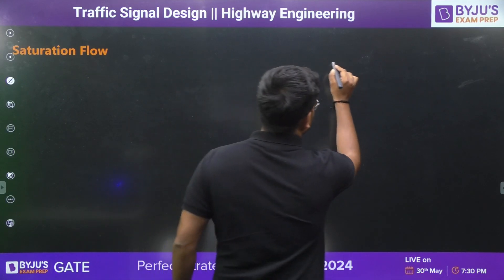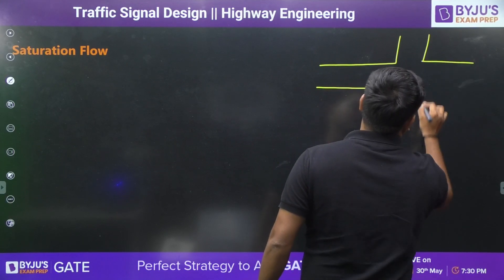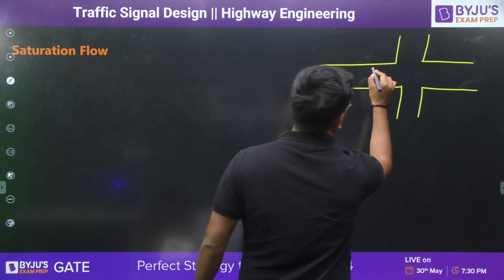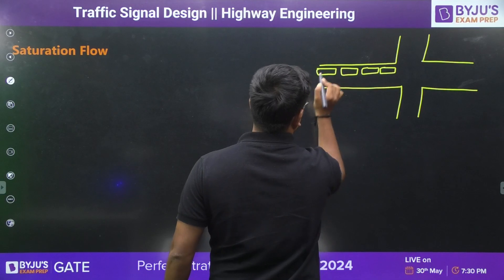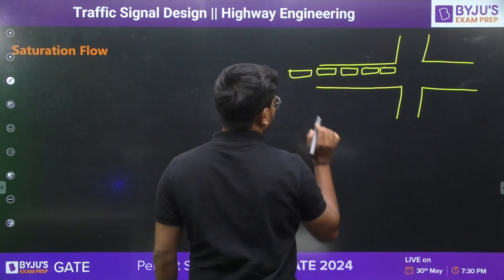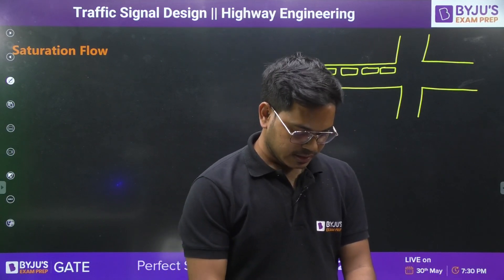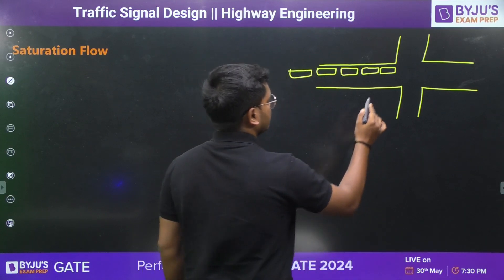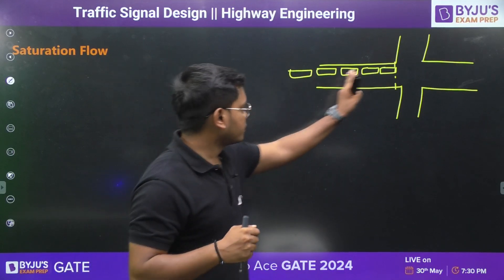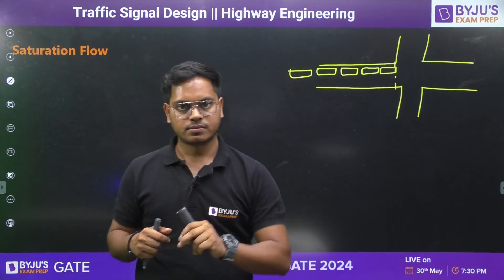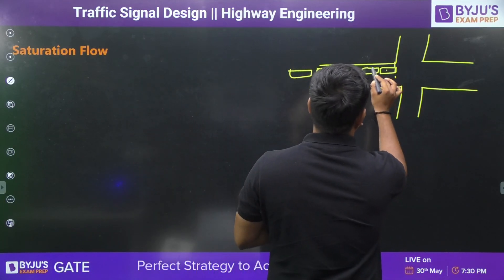Suppose we are having a pavement — we have a road here and this is an intersection. Right now, for this road, we have the red light, so all the vehicles are standing in a queue. As soon as the green light turns on, all of them will slowly start crossing this section — the dotted line. Let's say the time gap between vehicle number one and number two is time headway HT1.